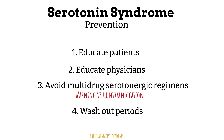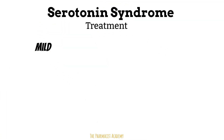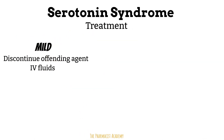Patients who develop serotonin syndrome should be managed based on symptom severity. For mild symptoms, we begin by discontinuing the offending agents, then providing supportive therapy with hydration, and giving benzodiazepines to alleviate symptoms such as hypertension, tachycardia, and involuntary movements. All of this occurs in the hospital, so patients must be monitored closely.